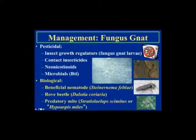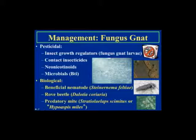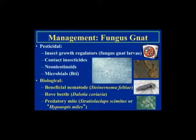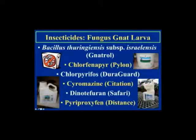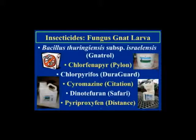For pesticide management of fungus gnats, options include insect growth regulators, contact insecticides, neonicotinoids, and microbials such as BTI. We also have excellent biological controls including nematodes, rove beetles, and predatory mites. Key points: ensure thorough coverage of all plant parts or the growing medium, and rotate products with different modes of action. Natrol is a stomach poison; Pylon and Duraguard are contacts; Citation is an insect growth regulator; Safari is a contact; and Distance is an insect growth regulator. Be sure to read the label — especially regarding poinsettia bracts — to avoid phytotoxicity.